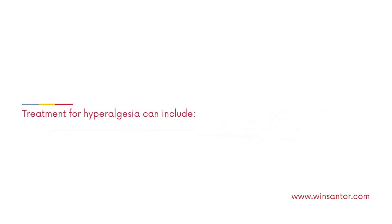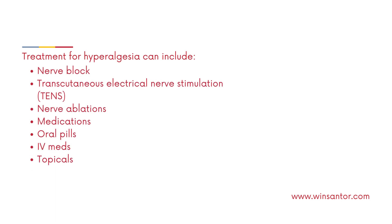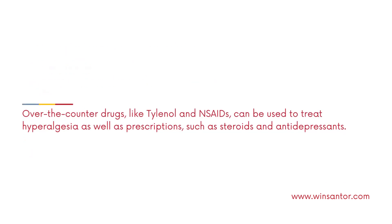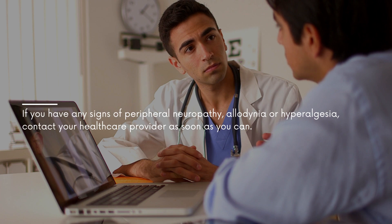Treatment for hyperalgesia can include nerve block, transcutaneous electrical nerve stimulation (TENS), nerve ablations, and medications such as oral pills, IV meds, and topicals. Over-the-counter drugs like Tylenol and NSAIDs can be used, as well as prescriptions such as steroids and antidepressants. If you have any signs of peripheral neuropathy, allodynia, or hyperalgesia, contact your healthcare provider as soon as you can.